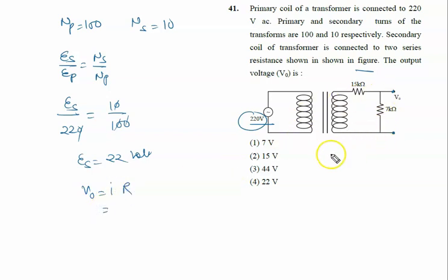I is the current flowing in the 7 kilo ohm. Both 15 and 7 are connected in series, so net current is given by voltage at the secondary upon net resistance. Voltage at the secondary is 22, resistance is 15 plus 7, that is 22 kilo ohm.